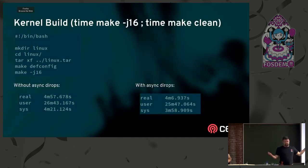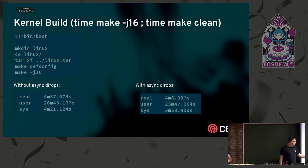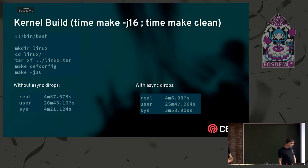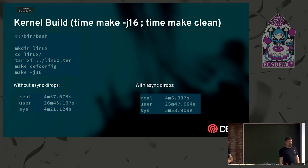The all-important kernel build test: I made a Linux tarball, made a directory, CD'd into it, untarred it, and ran make. Without async dir ops, it takes about five minutes to do the build. With async dir ops, we shave about 50 seconds off — about a 20% improvement. Not bad.